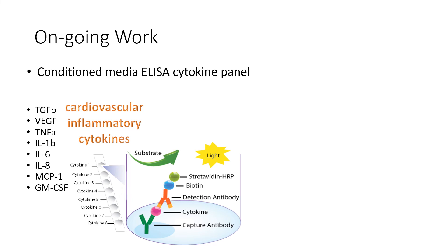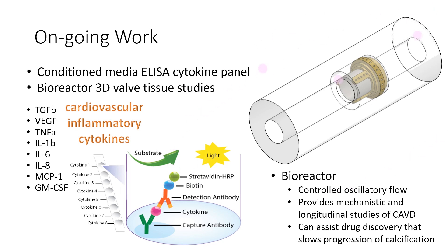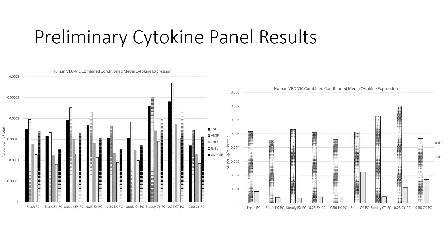In the interest of cytokine communication, we are assessing possible calcific pathways triggered by flow environments. The list here includes some cardiovascular inflammatory cytokines. We can use them to target biomarkers that develop valve diseases and hopefully synthesize something that intervenes with disease progression. We will also be continuing to study the correlation between OSI and progression of CAVD in a bioreactor. Our preliminary cytokine panel results on the human VEC-VIC conditioned media show high expressions in the IL-6 and IL-8 cytokines. However, the test panel is limited by the number of cytokines, and further methods such as mass spec protein analysis may be considered.